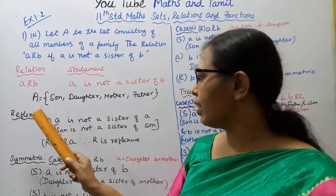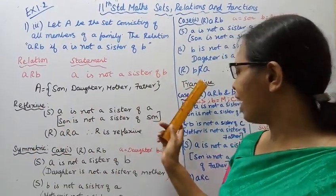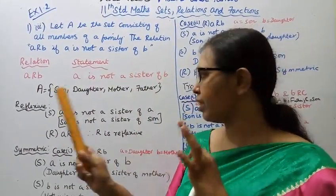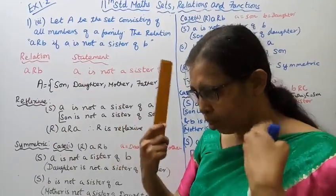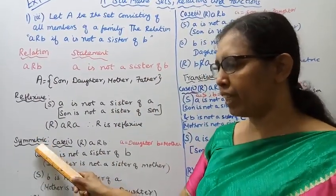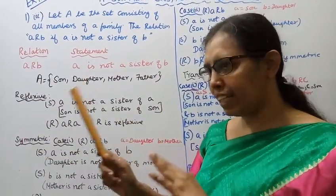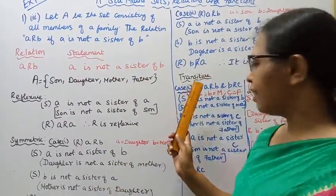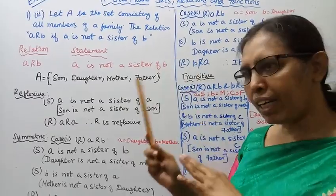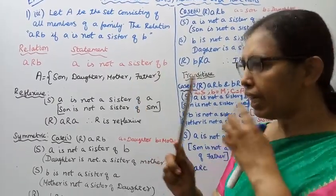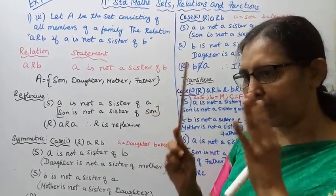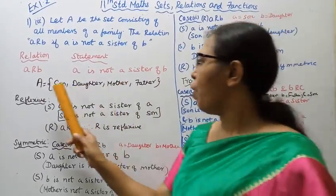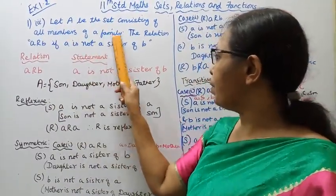We need to check whether this relation is reflexive, symmetric, or transitive. Recall the definitions: reflexive means a is related to itself; symmetric means if a is related to b then b is related to a; transitive means if a is related to b and b is related to c, then a is related to c. Keep these definitions in mind.